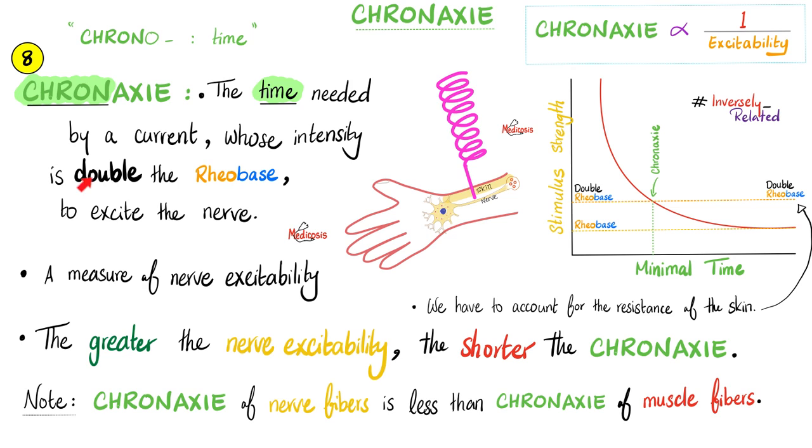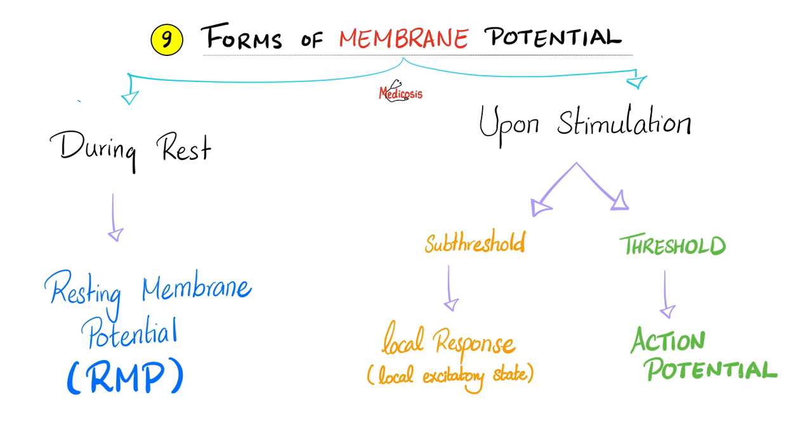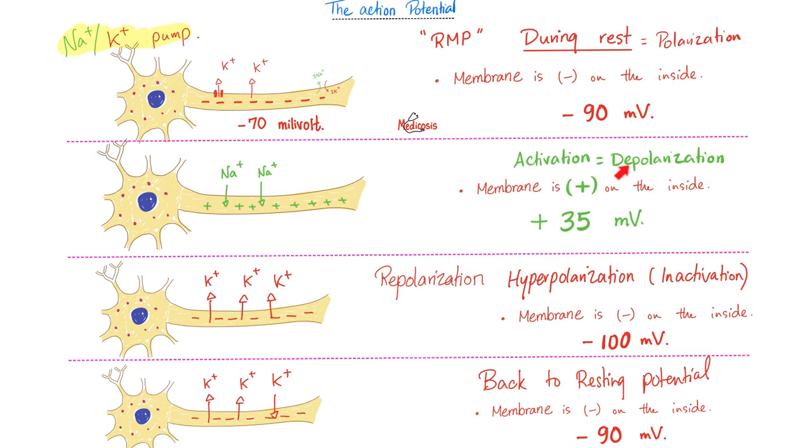Chronaxie is the time, because chrono is time. Time needed by a current whose intensity is double the rheobase. During rest, called the resting potential. Upon stimulation, if you treat me with respect, I'll treat you with respect. Called action potential. If you treat me with less respect, I'll treat you with no respect. During rest, potassium efflux. Upon depolarization, sodium influx. And then repolarization, you stop the sodium influx and you start potassium efflux. And then you overshoot, inward rectifying, return to normal.